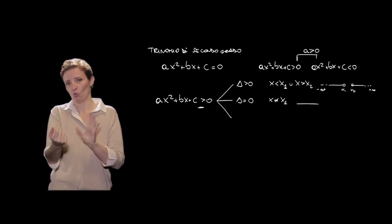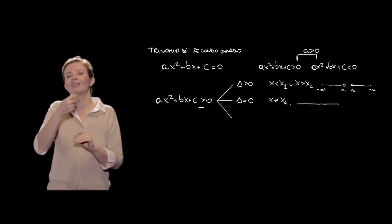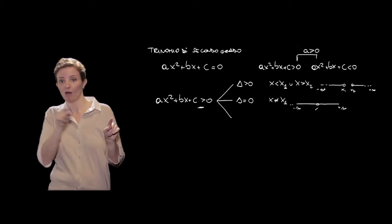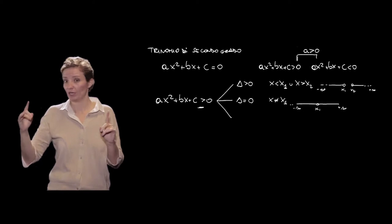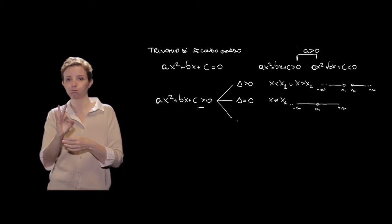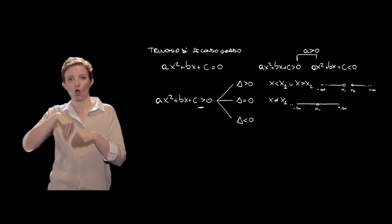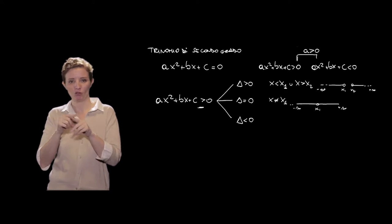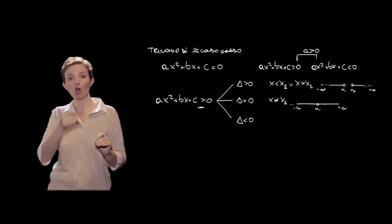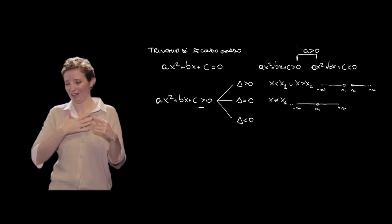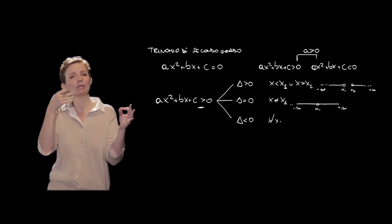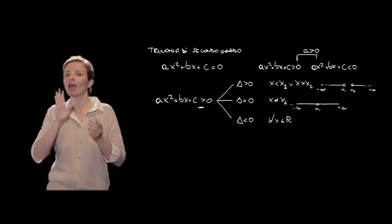Graficamente, per delta = 0, da meno infinito a più infinito il trinomio è positivo, tranne in corrispondenza di X1, che non rientra nell'insieme delle soluzioni della disequazione. Infine, per delta < 0, la nostra equazione associata non ha soluzioni e il trinomio è sempre positivo, quindi la soluzione è per ogni X appartenente ai reali.